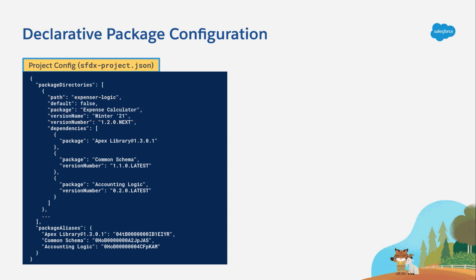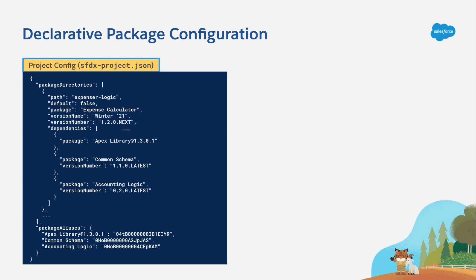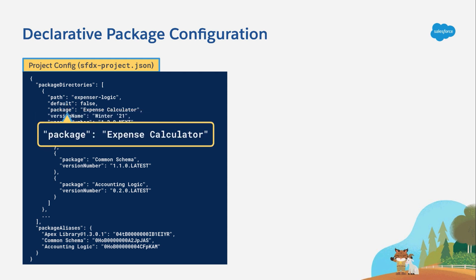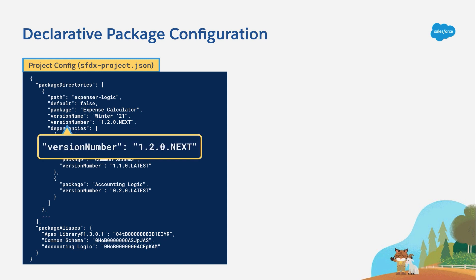Each entry also has critical information about the package that it represents. There's the path of the folder containing the source for the package. There's the name of the package, which is what subscribers would see during installation and in the installed packages section in setup. Then there's also the version name, which is a consumer-friendly label for a given family of releases. And finally, there's the version number, which will be used the next time that the package is built.